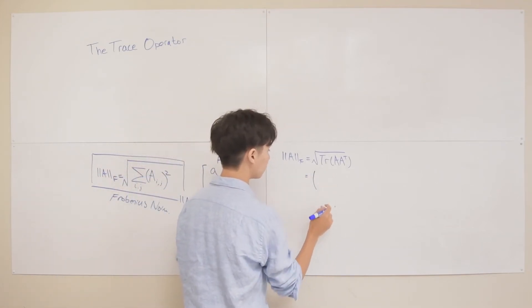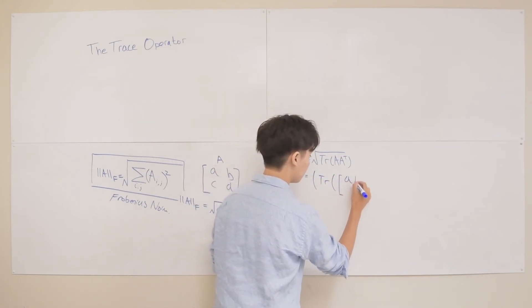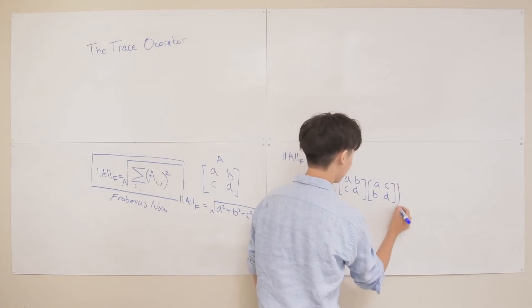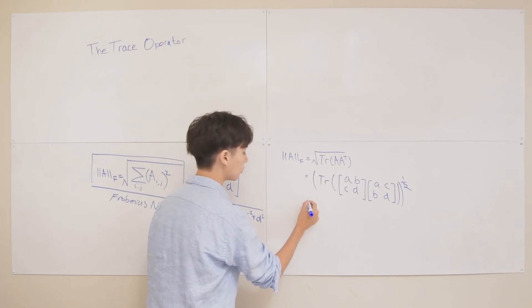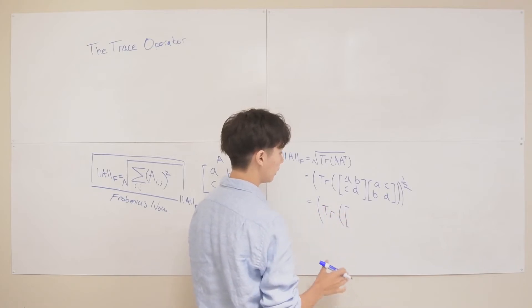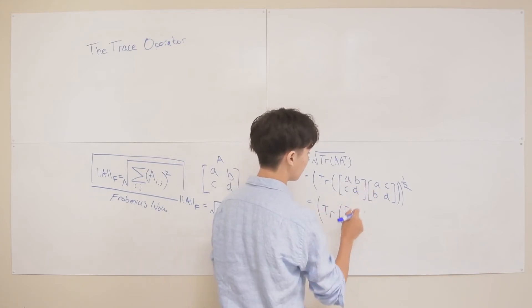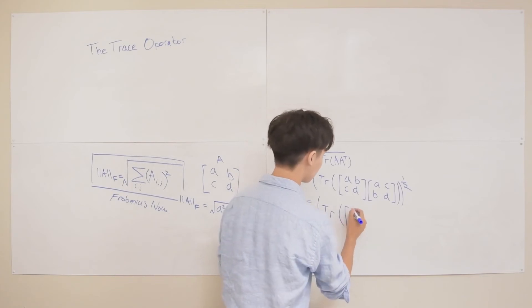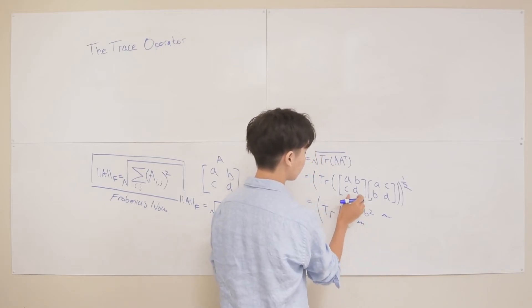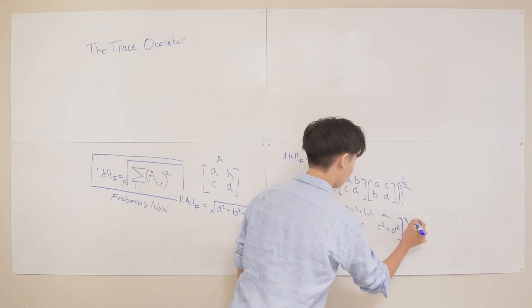I'm going to turn that square root into a fractional power since it's easier to write, and then we have the trace of A times A transpose. Using our example with elements A, B, C, D, we multiply this by its transpose, which is A, C, B, D. Let's multiply these matrices out — since I'm lazy, I'm just going to find the diagonal elements of the product, because the non-diagonal elements won't matter when we take the trace. The first diagonal element is A squared plus B squared, and the last diagonal element is C squared plus D squared.